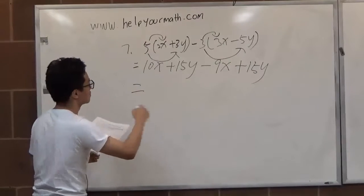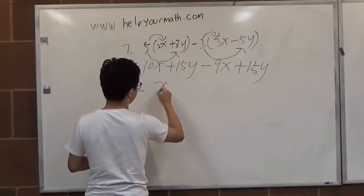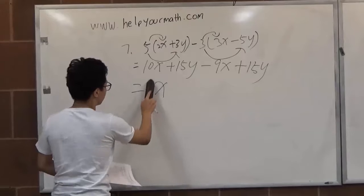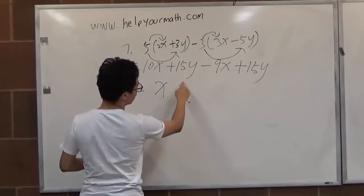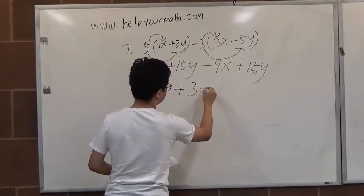We just do the calculation. 10x minus 9x equals 1x. This is 1 here, there is 1 here. And 15y plus 15y is 30y.